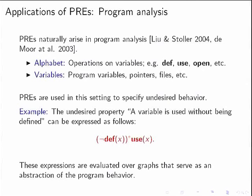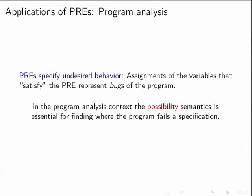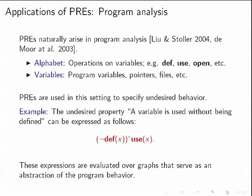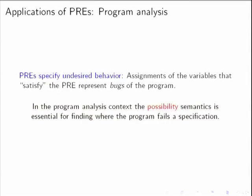We create a graph as an abstraction of the program and evaluate this expression over the graph. If there is some interpretation of the variable x such that this expression holds on the graph, then we've seen a path exhibiting undesired behavior, and the program analysis returns failure. This is an example of the possibility semantics: we need just one interpretation of x to witness membership in the language.